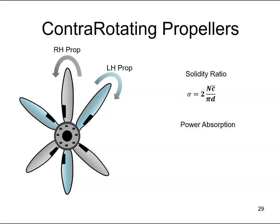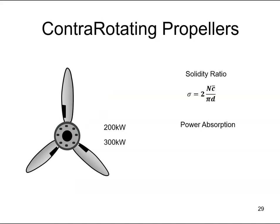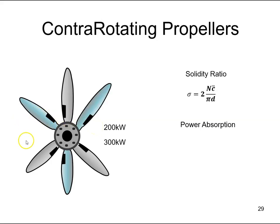The solidity ratio is all about power absorption. If an engine is delivering 200 kilowatts to a propeller and it rotates at a given RPM, if we increase the power to 300 kilowatts, the propeller would rotate faster — perhaps too fast — and just can't absorb that much power. To help absorb that extra power, we would add additional blades — in this case, a second propeller rotating in an equal and opposite direction. That's what we mean by power absorption: the propeller can absorb more power delivered by a particular engine.